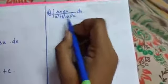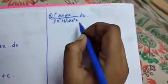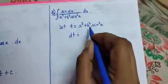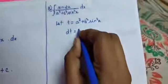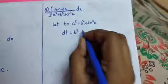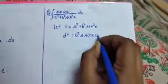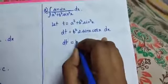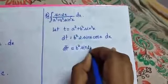Now let us do our eighth sum. I is equal to integral of sin 2x divided by a squared plus b squared sin squared x, into dx. Let p be equal to our denominator a squared plus b squared sin squared x. So dt is equal to b squared into sin squared x differentiated, which gives b squared into 2 sin x cos x into dx. So I can write this as dt is equal to b squared into sin 2x into dx.